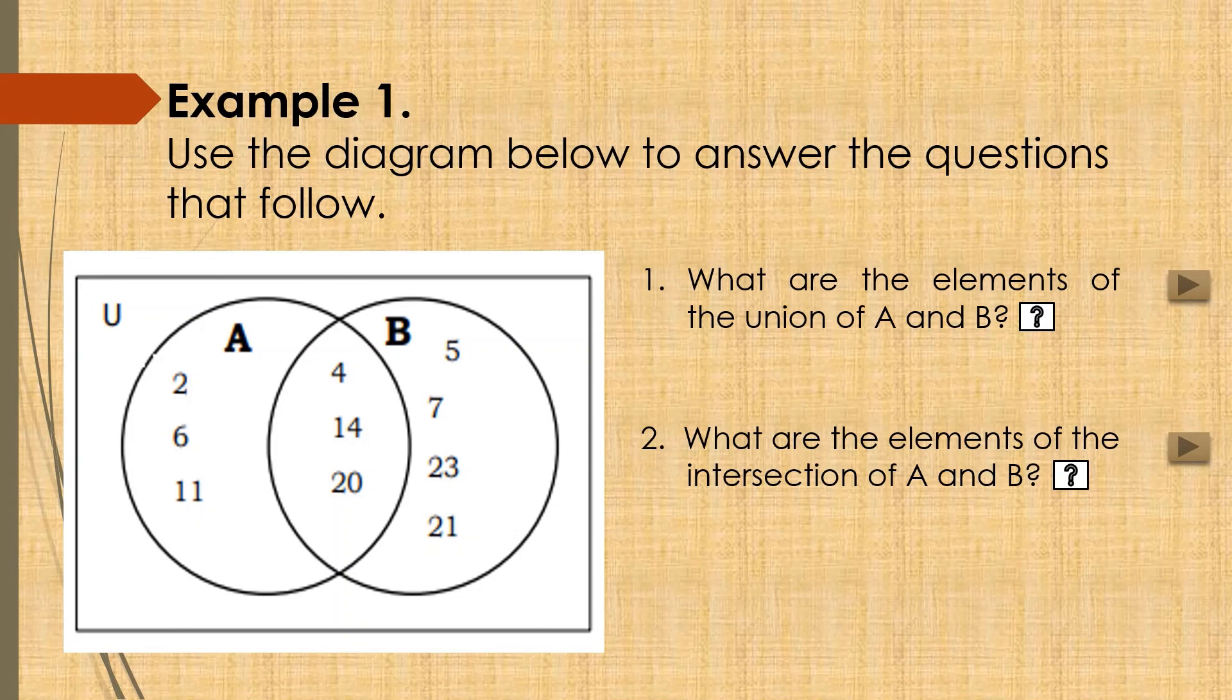Let's have example number 1. Use the diagram below to answer the questions that follow. But before we answer the questions, let's talk about first this given Venn diagram. We have two sets, set A and set B.